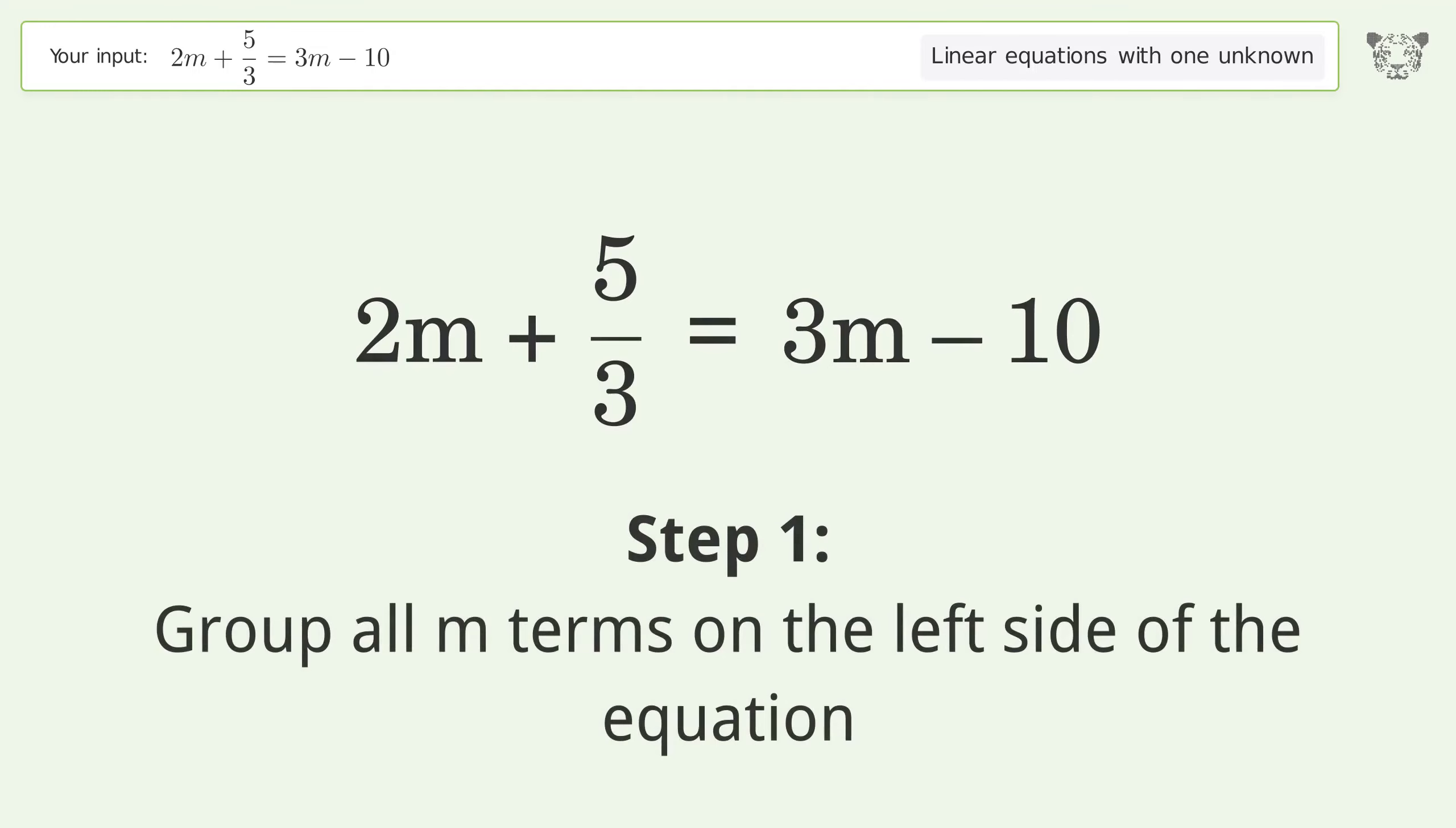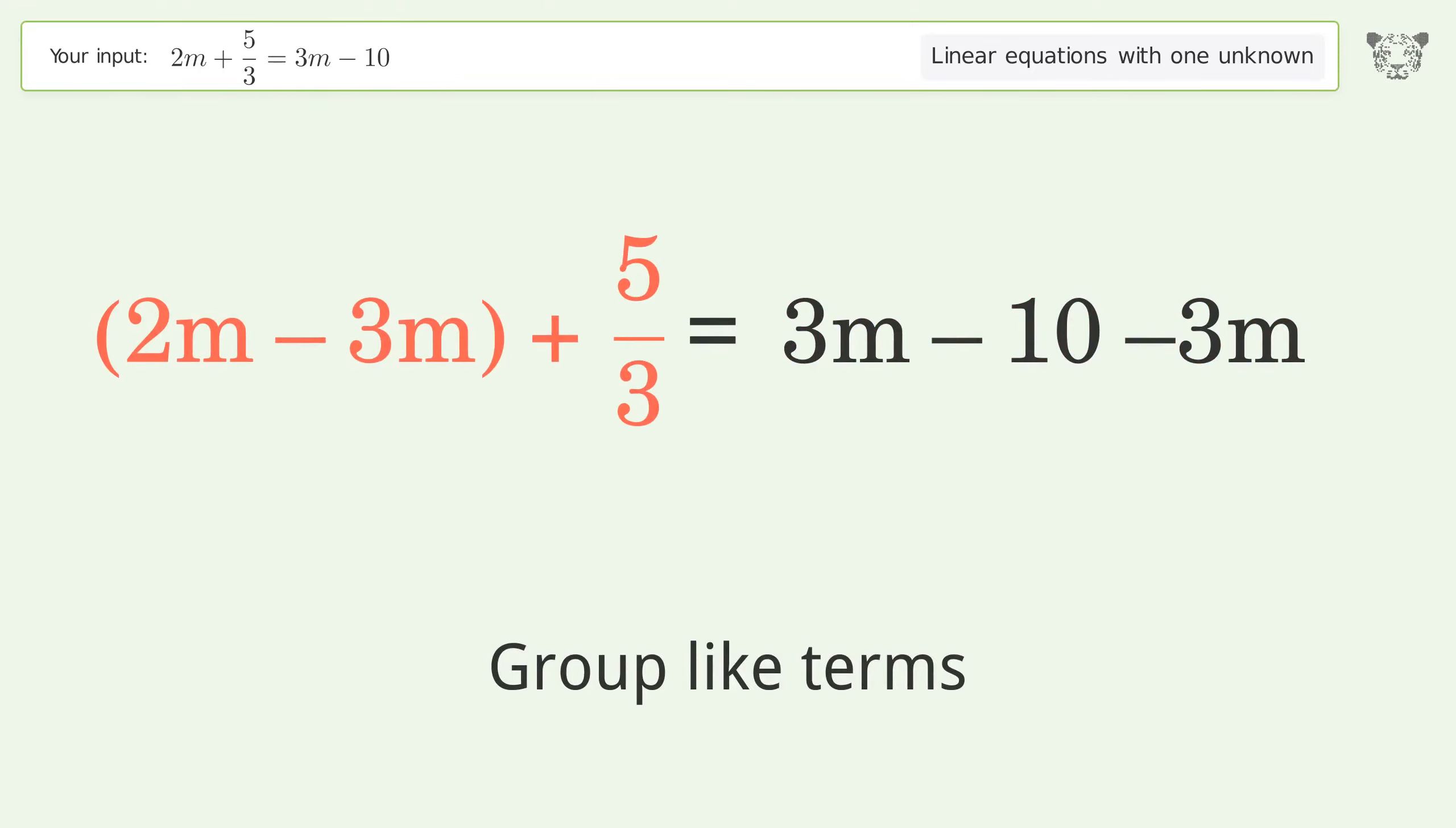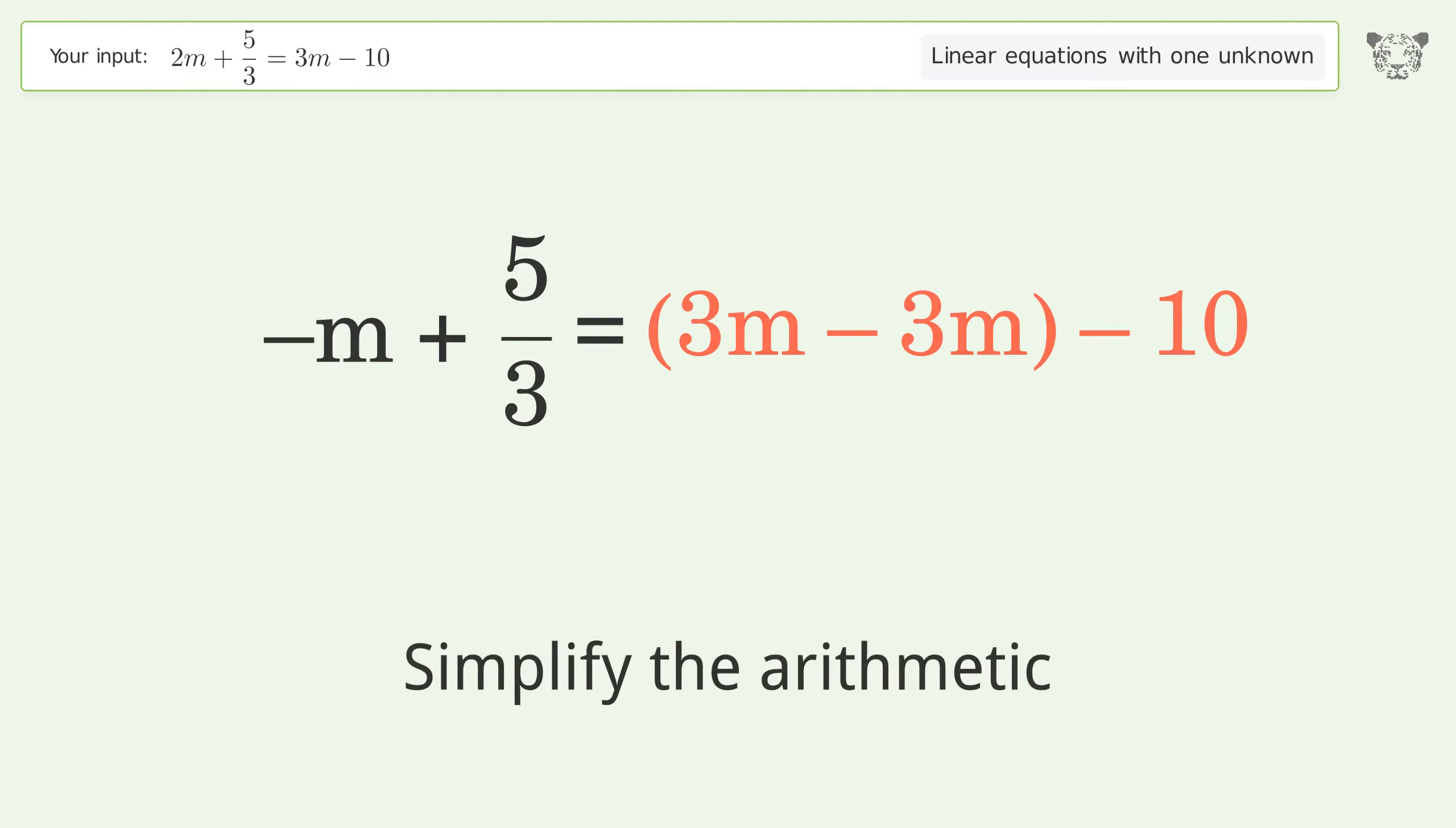Group all m terms on the left side of the equation. Subtract 3m from both sides. Group like terms. Simplify the arithmetic.